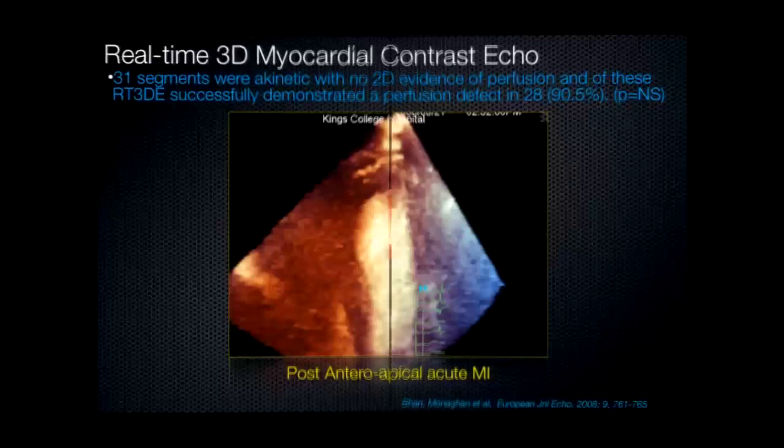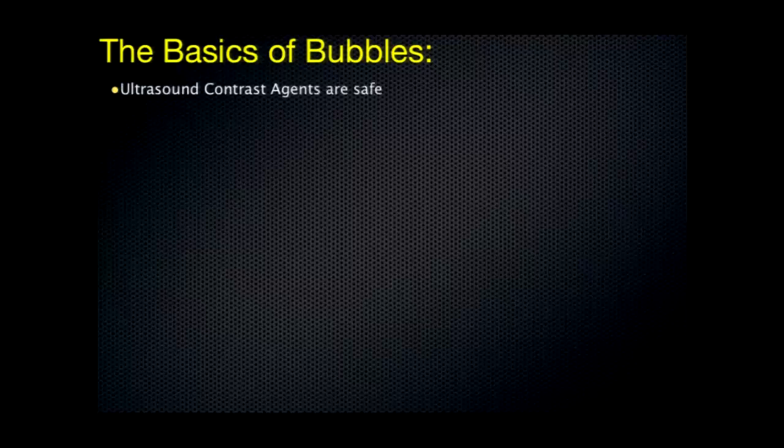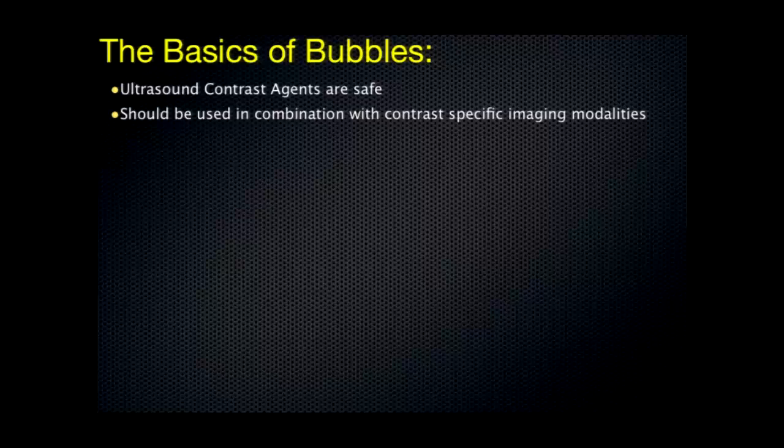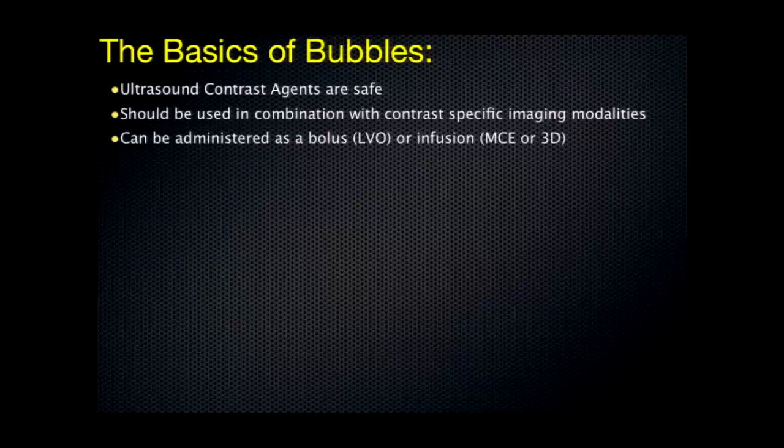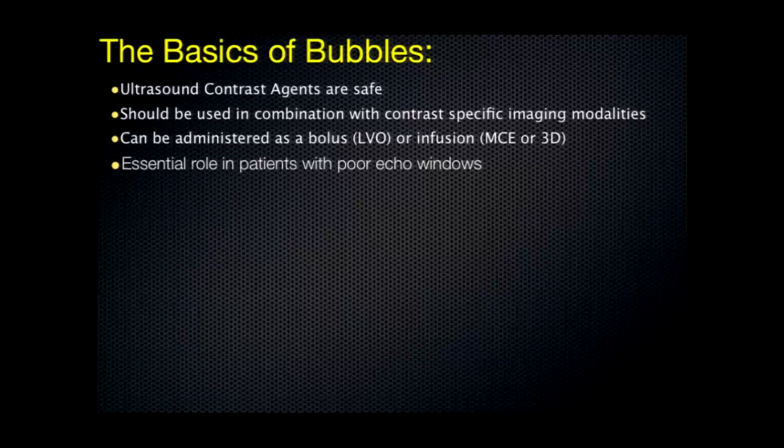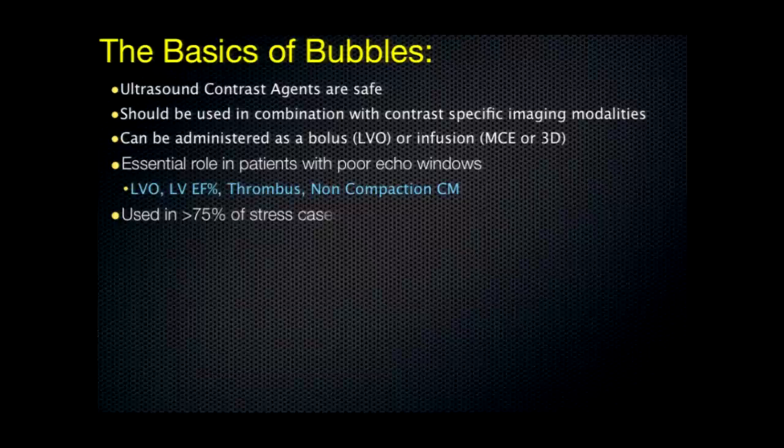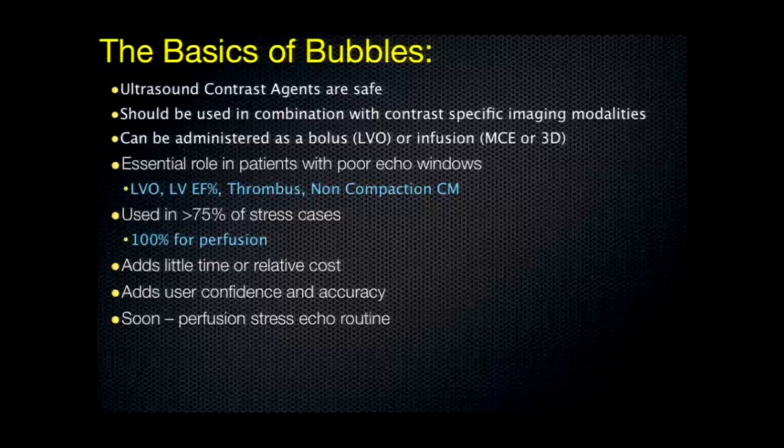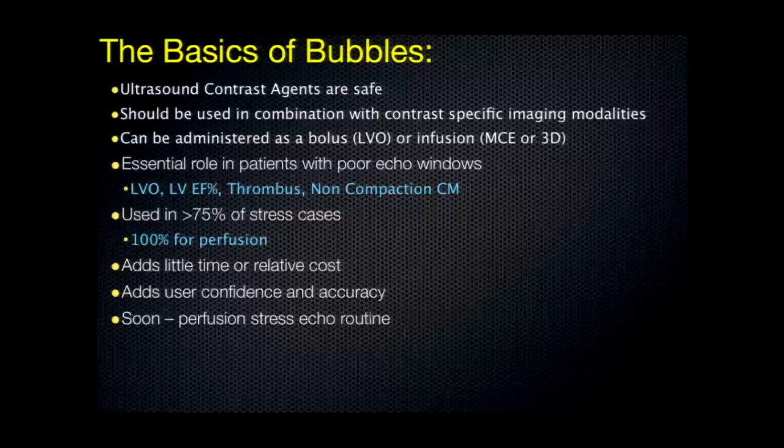So I'm just going to skip past this, because my time is almost out. That's just looking at 3D perfusion, and come to my conclusion slide. So ultrasound contrast agents are safe, and I haven't had time to discuss that, but we may be able to do that in the question session. It should be used in combination with the contrast-specific imaging modalities, and all vendors have those available. They can be administered as a bolus or an infusion, and I think there are different settings where that's helpful. They have an essential role in patients with poor echo windows, and I've given you a couple of examples. We use them in at least 75% of our stress echo cases, but 100% when we want to look at perfusion. It adds little time or relative cost, adds user confidence and accuracy, and I believe that soon perfusion stress echo will be routine, which will lead us to a faster study and improved accuracy. And as you're going to hear later on in this session, there are multiple future applications. Thank you very much.